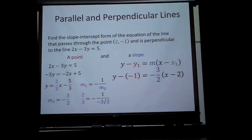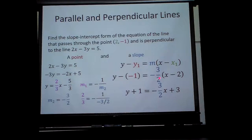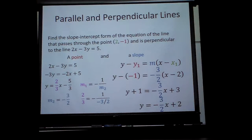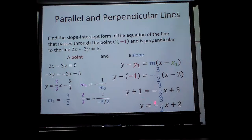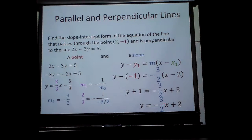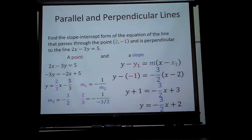Plugging those in. So y minus this negative one, the same as y plus one. And this time, I'm going to take negative three halves times x. And negative three halves times a negative two, the twos will cancel. Negatives cancel, giving me a plus three. Go ahead and minus that one. So the perpendicular line would be y equals negative three halves x plus two. That would be our graph right there.